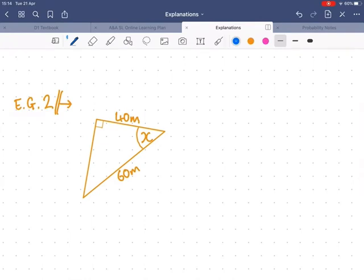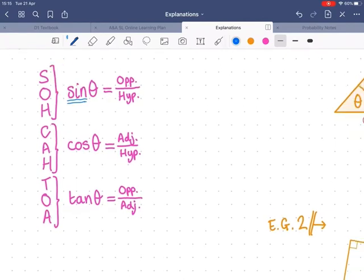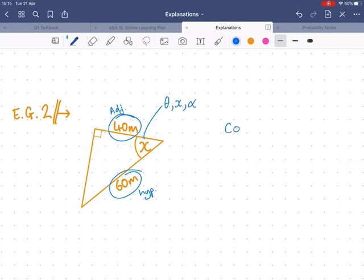Another example. Another missing angle. It's not always called theta, it could be x, theta, or alpha, or any letter really. Or it could just be labeled like this, it could be find angle ABC. There's infinite possibilities there. But again, we start the same way. What is this side called? It's the adjacent, it's next to both angles. What is this side called? Well, it's opposite the right angle, so hypotenuse. Which equation uses adjacent and hypotenuse? Cos. So cos of x equals adjacent over hypotenuse.